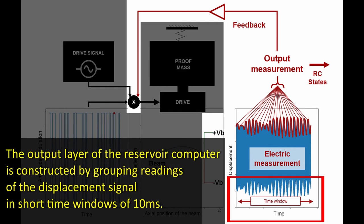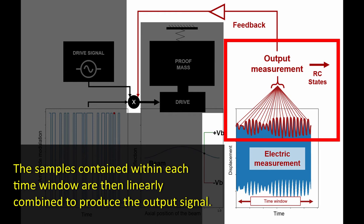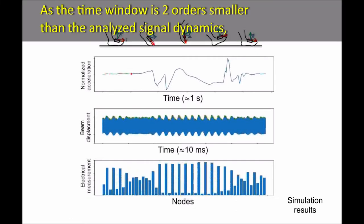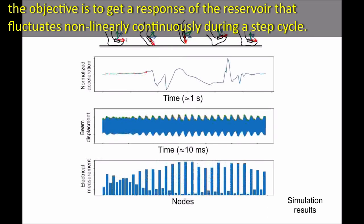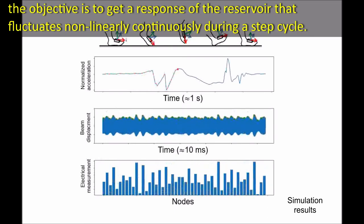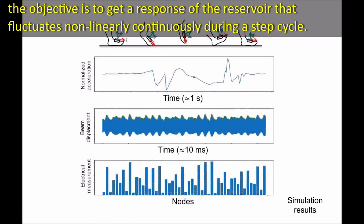The output layer of the reservoir computer is constructed by grouping readings of displacement signal in short time windows of about 10 milliseconds. The samples contained within each time window are then linearly combined to produce the output signal. As the time window is two orders smaller than the analyzed signal dynamics, the objective is to get a response of the reservoir that fluctuates nonlinearly continuously during a step cycle.